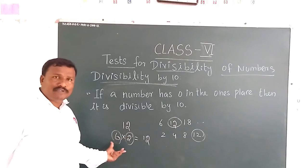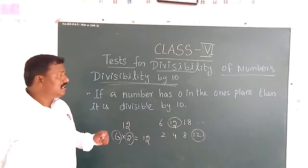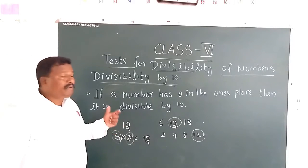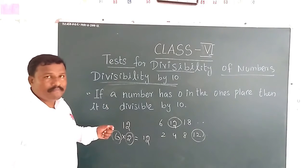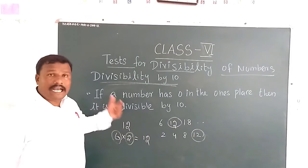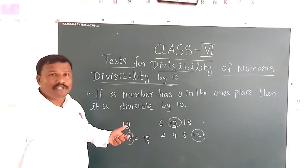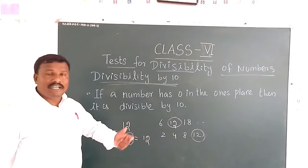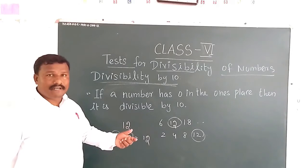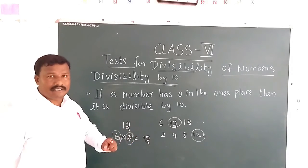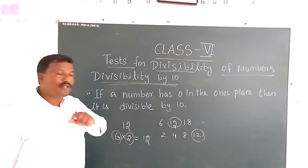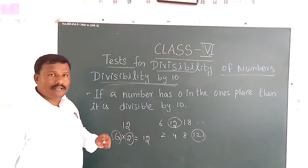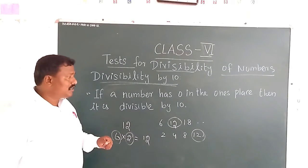We can divide 12 by both of these numbers. In some cases we have big numbers, so that's why we have some divisibility rules — to quickly determine whether a number can be completely divided by another number without a remainder.